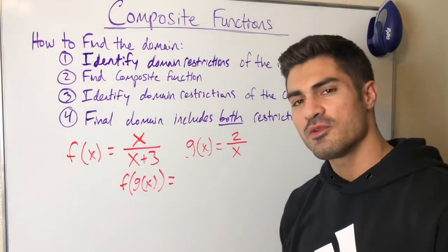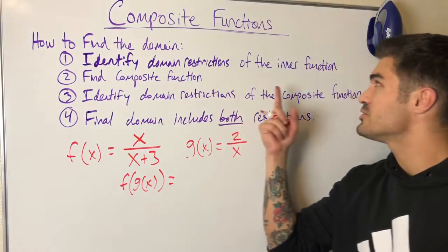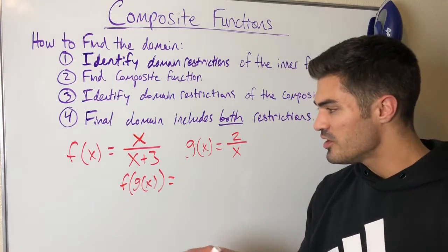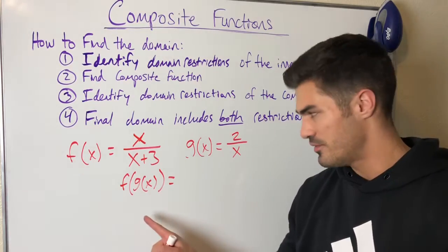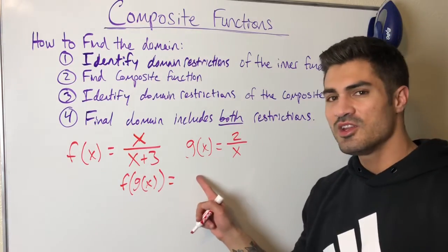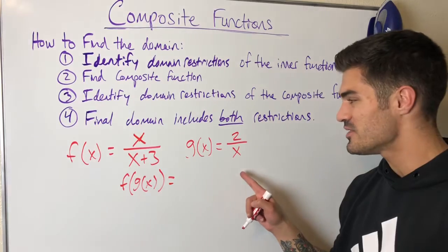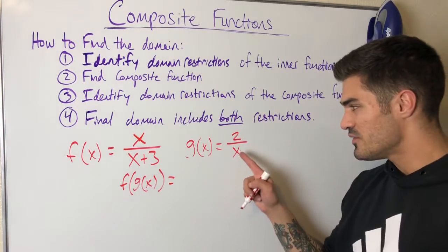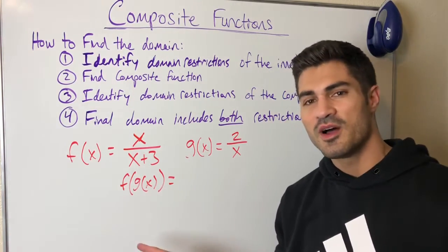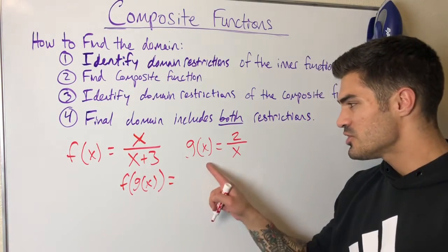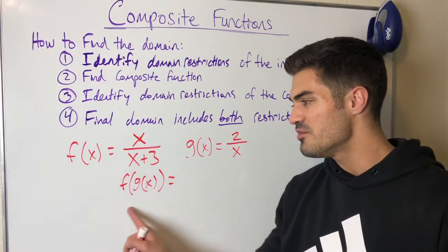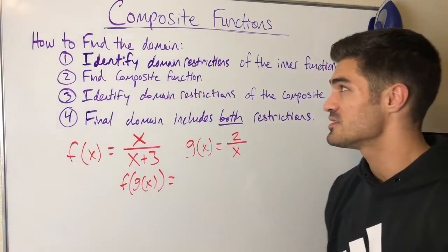Let's try another example. We're going to find f of g of x and its domain. The reason we identify restrictions of the inner function first is because the inner function runs first — I plug in a number, it goes through the inner function, then through the outer function. So if there's a number where the inner function is undefined — like zero in the denominator — then zero is not in the domain of the inner function, and therefore not in the domain of f of g of x either.